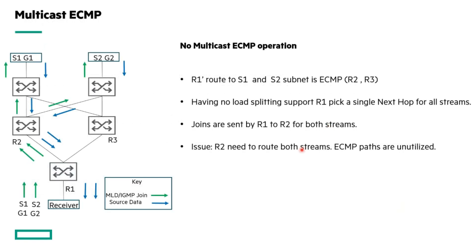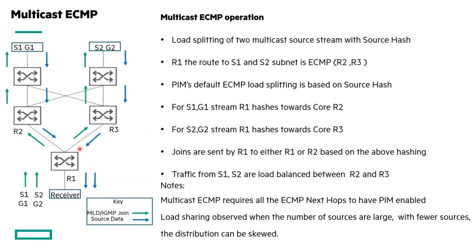Under the hood, we have multicast receivers connected to the R1 router device with multicast streams coming from sources S1 and S2. Without ECMP, traffic tends to bind to one direction — in this case going only through R2 to reach R1, which is not ideal. With the feature enabled, there's much better distribution of traffic flows — they can come through either R2 or R3, which provides much better resiliency in the environment.